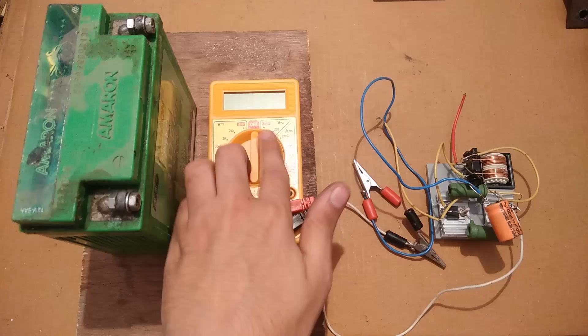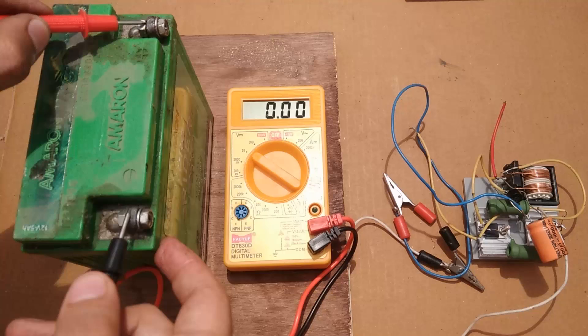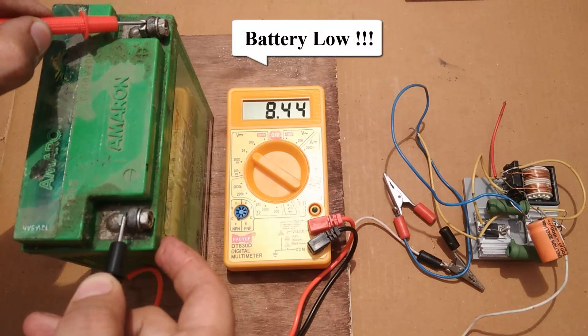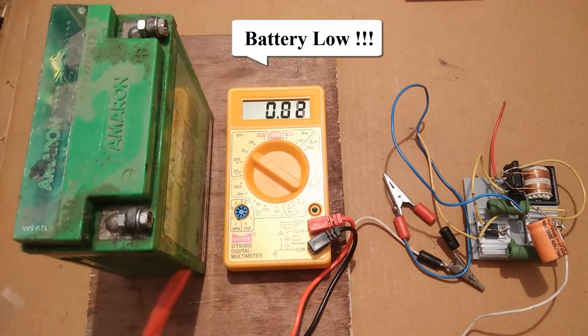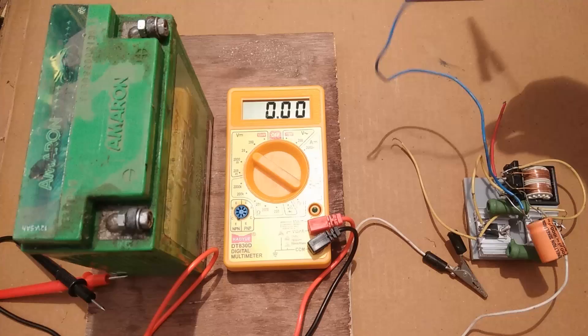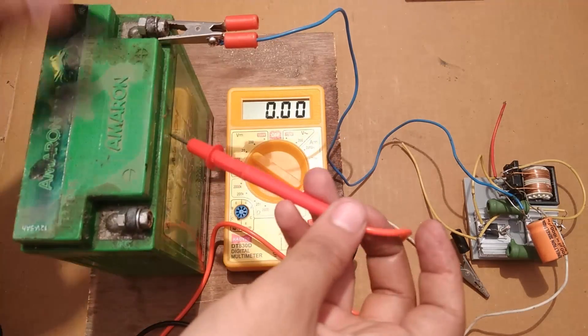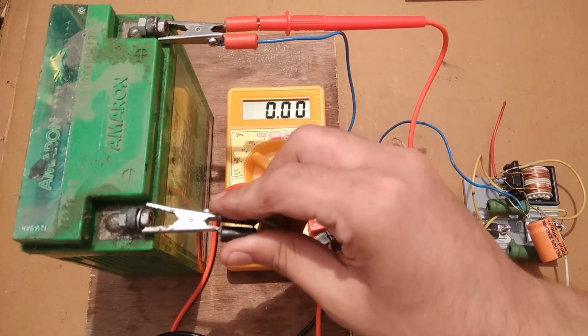This is a 12V Amaron battery that is used in Royal Enfield motorcycles, and as you can see it is very discharged, showing 8.44V when it should be 12V. Here I am going to use this handmade circuit to charge this battery with just an input supply of 3.5V DC.